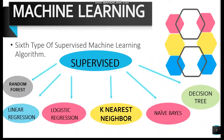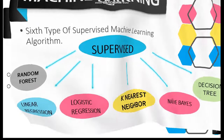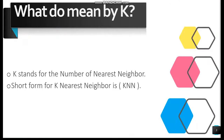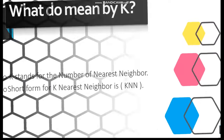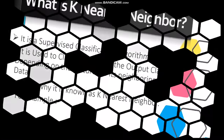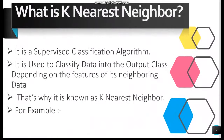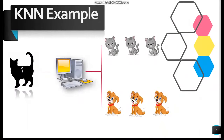Our sixth type of supervised learning algorithm is K-Nearest Neighbor. K stands for the number of nearest neighbors. The short form for K-Nearest Neighbor is KNN. It is a supervised classification algorithm used to classify data into the output class depending on the features of its neighboring data. To understand KNN, let's consider a small example where we want to distinguish cats and dogs using a machine learning algorithm. We must input image data of cats and dogs to train our machine.